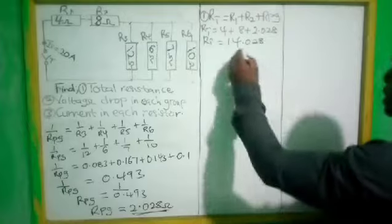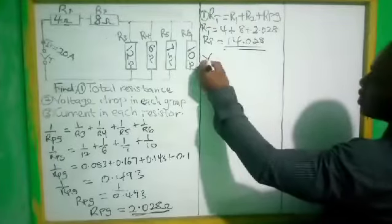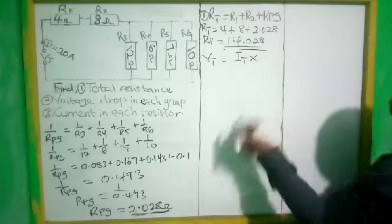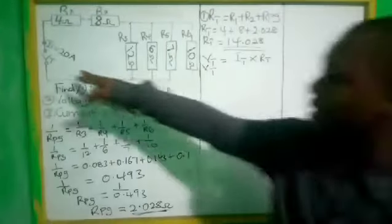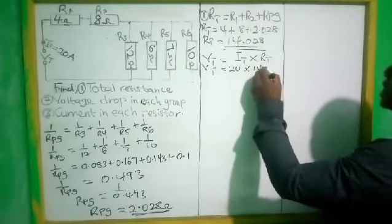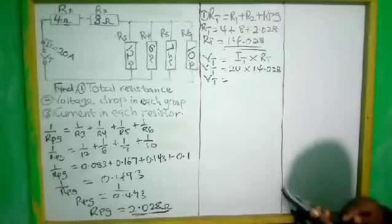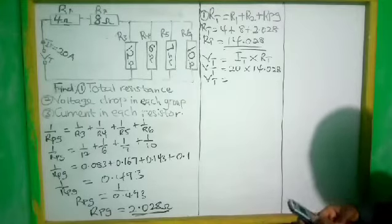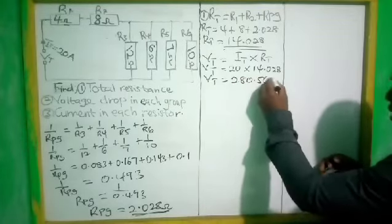Now that we have the total resistance, we can find the total voltage. Total voltage equals current times resistance. Our current is given as 20 amps, times the total resistance of 14.028 ohms. So 20 times 14.028 gives us a total voltage of 280.56 volts.